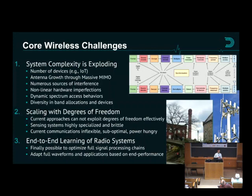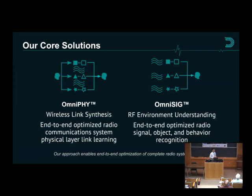We're working on end-to-end learned radio systems. Whatever impairments exist, whatever non-linearity, whatever environment you're propagating through — whether RF or optical — we just have the machine learn a non-linear transform that works very well. Our two products are OmniFi and OmniSig. OmniFi is the end-to-end system where you feed in bits and get out bits — it's an end-to-end wireless link synthesis.